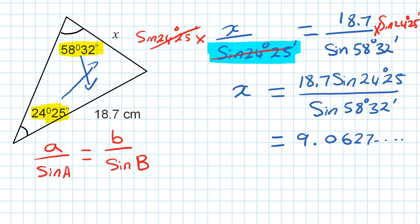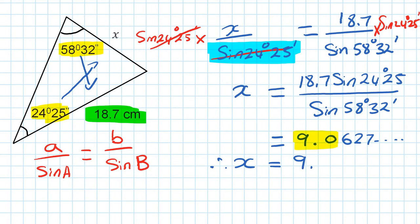Please do not write the full decimal as the answer. When you look at the question, it didn't specify how many decimal places. Looking at the given values, it gives 1 decimal place — 18.7 — so it's best to write to 1 decimal place. Before rounding to 9.0, look at the digit after: it's 6, which is 5 or more, so add 1. Therefore x equals 9.1 centimeters, correct to 1 decimal place.